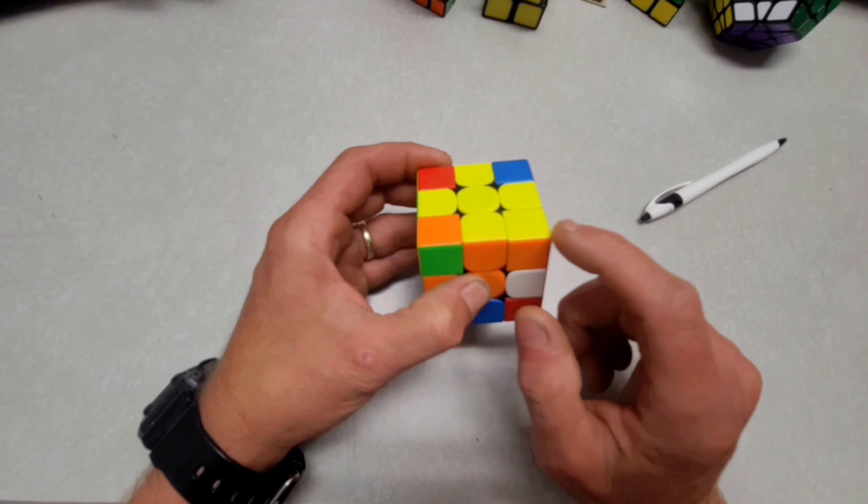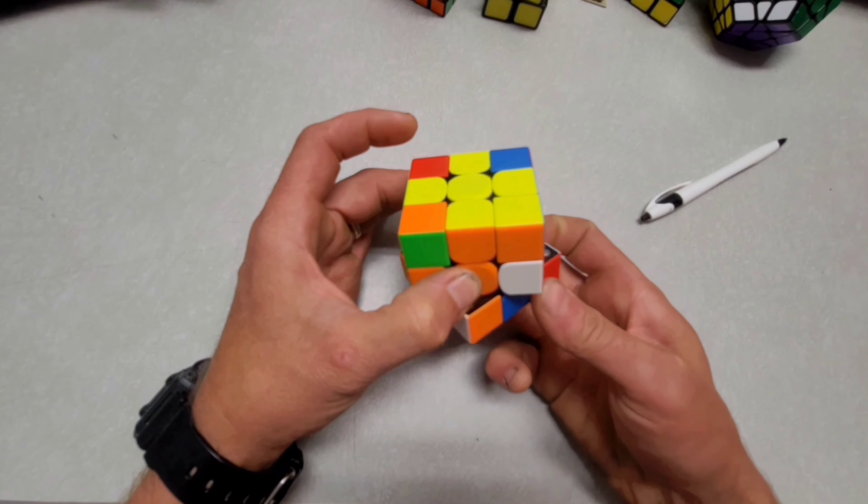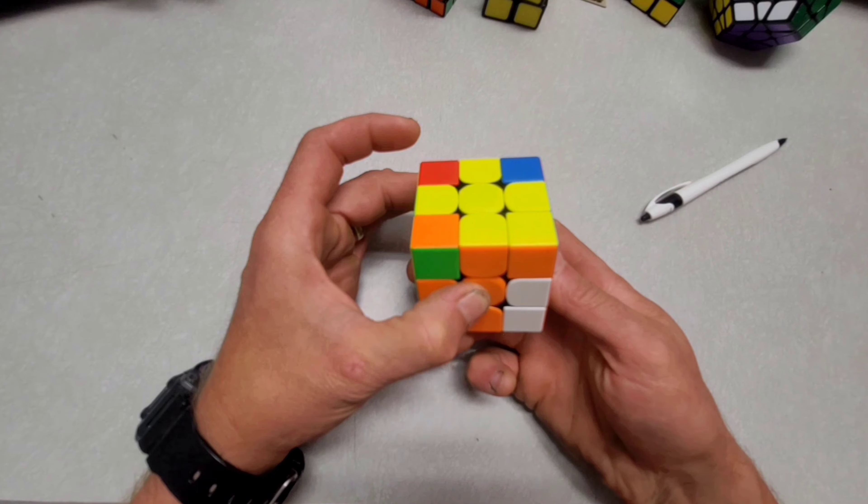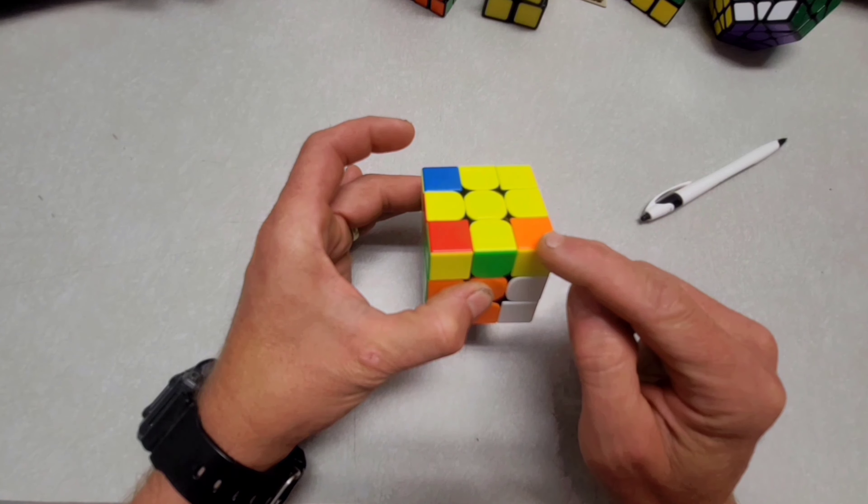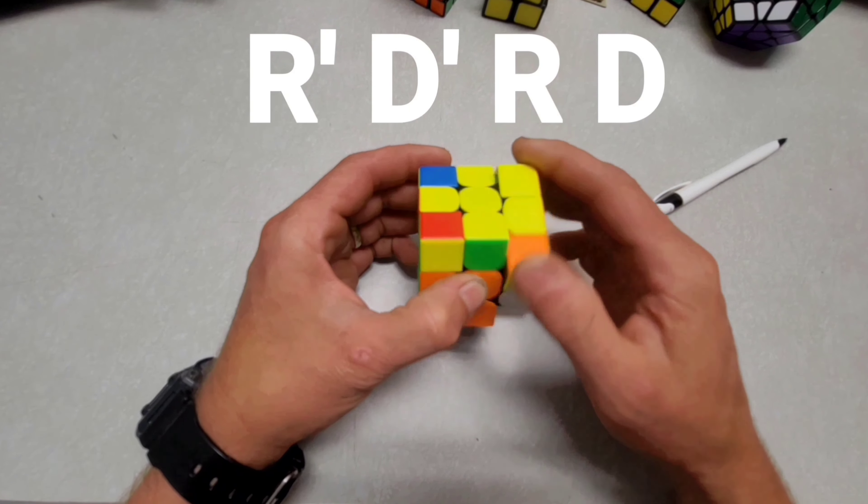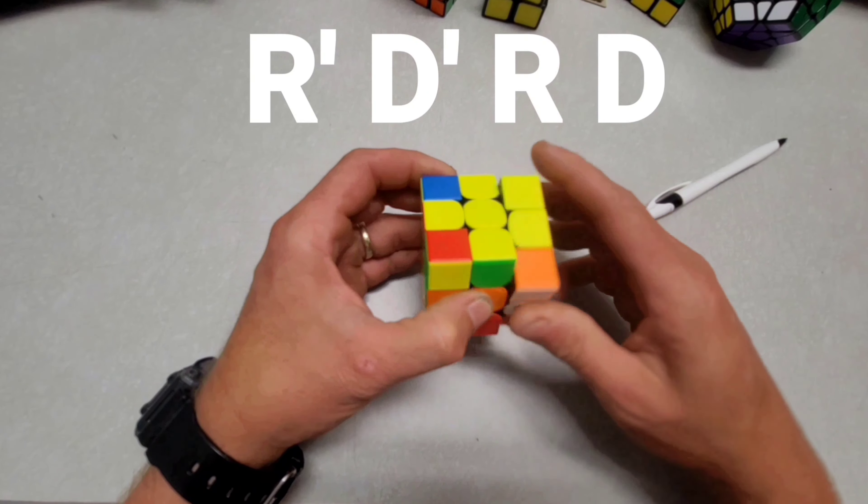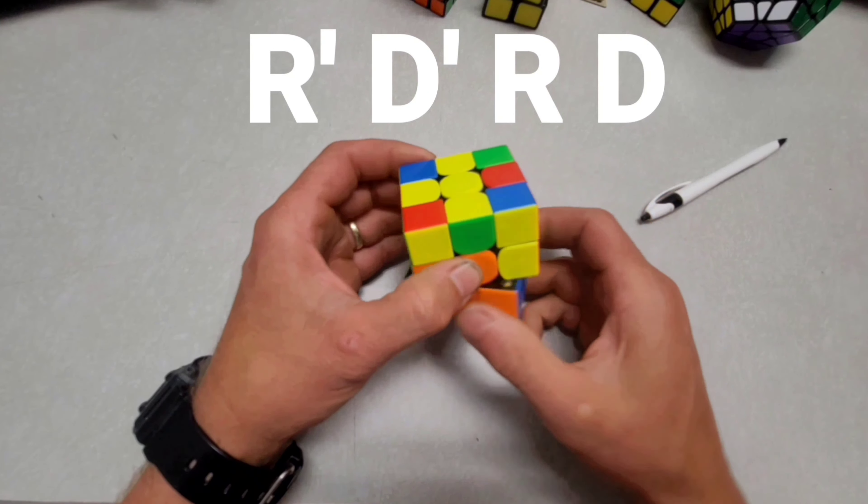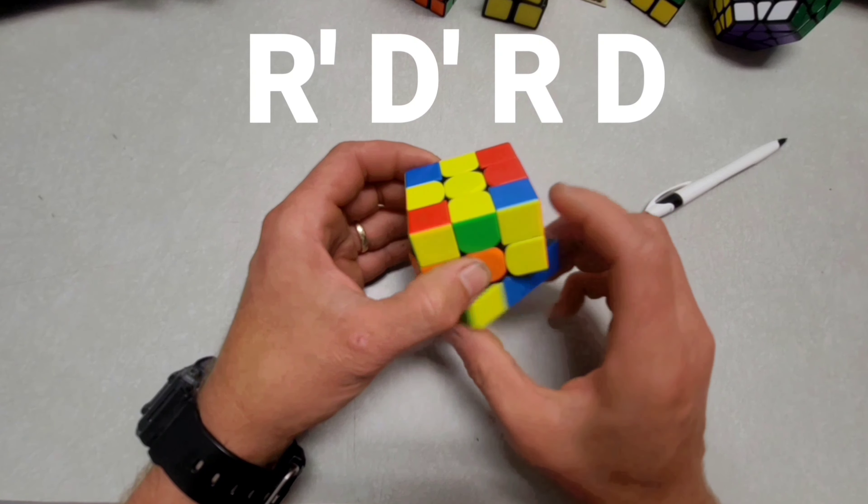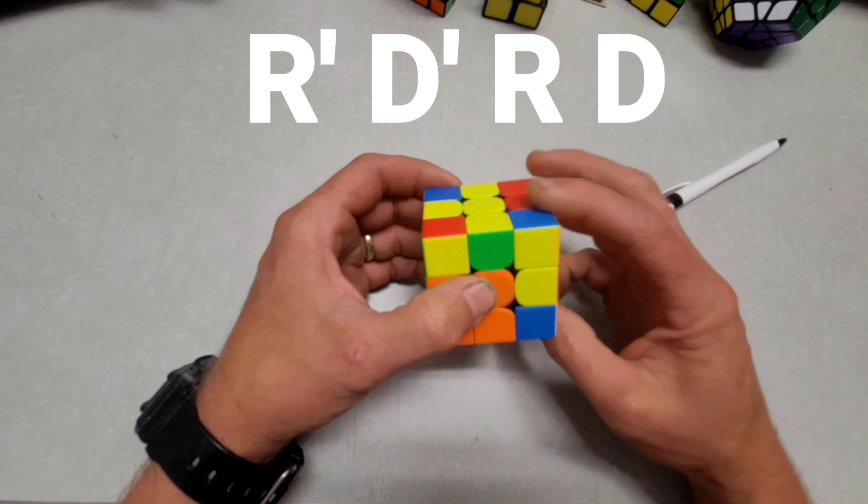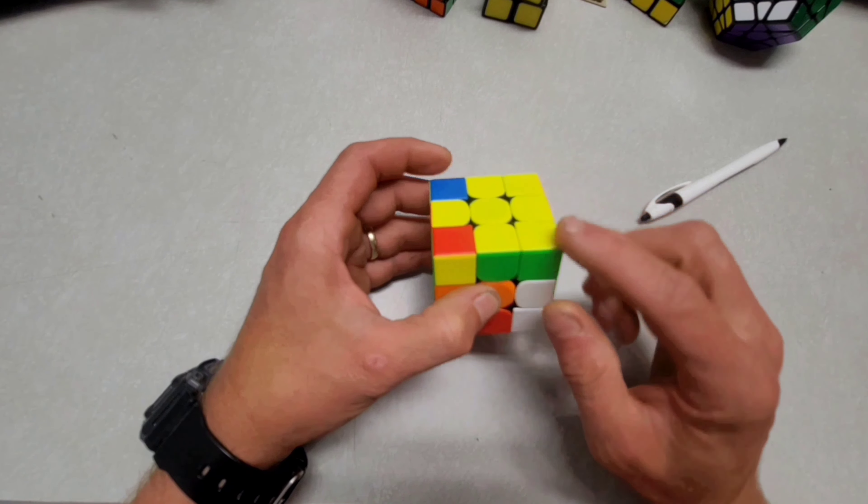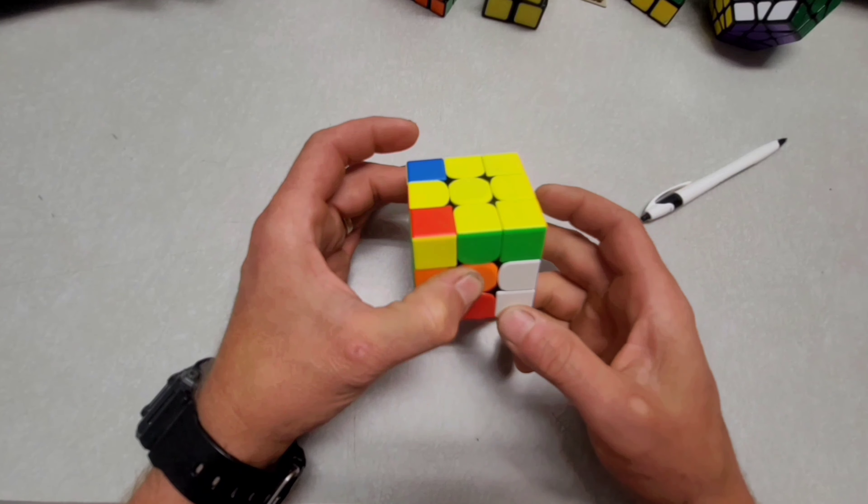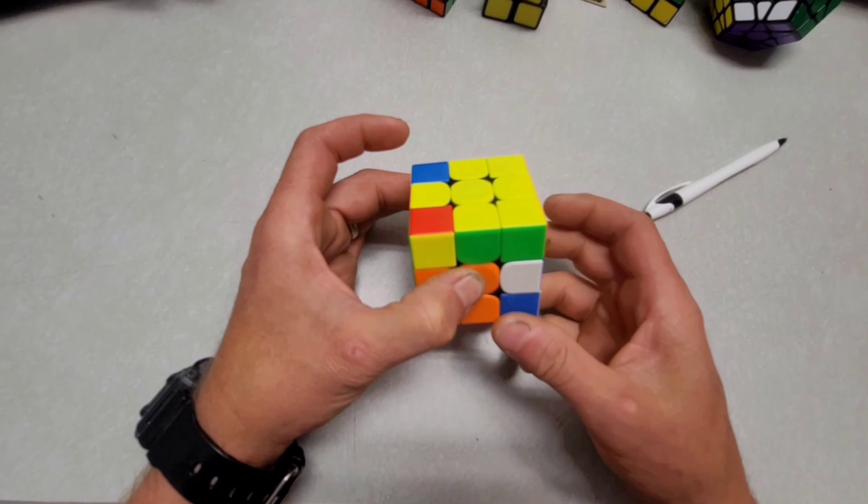And then once you get there, don't forget to turn your bottom piece this way. And then you turn this piece, you're trying to work right here. And continue it again. Right prime, down prime, right down. Right prime, down prime, right down. Right prime, down prime, right down. Right prime, down prime, right. See how it's solved? And then don't forget to turn this piece here.